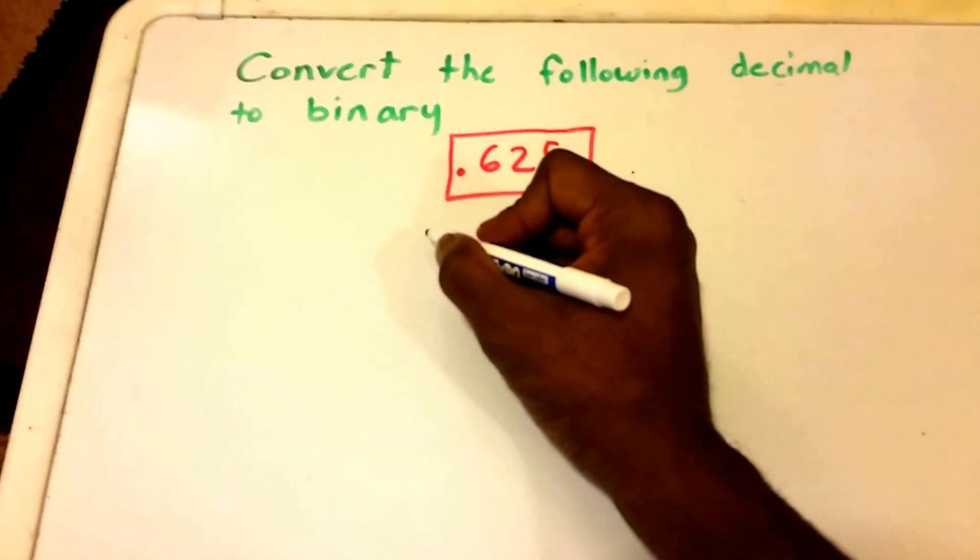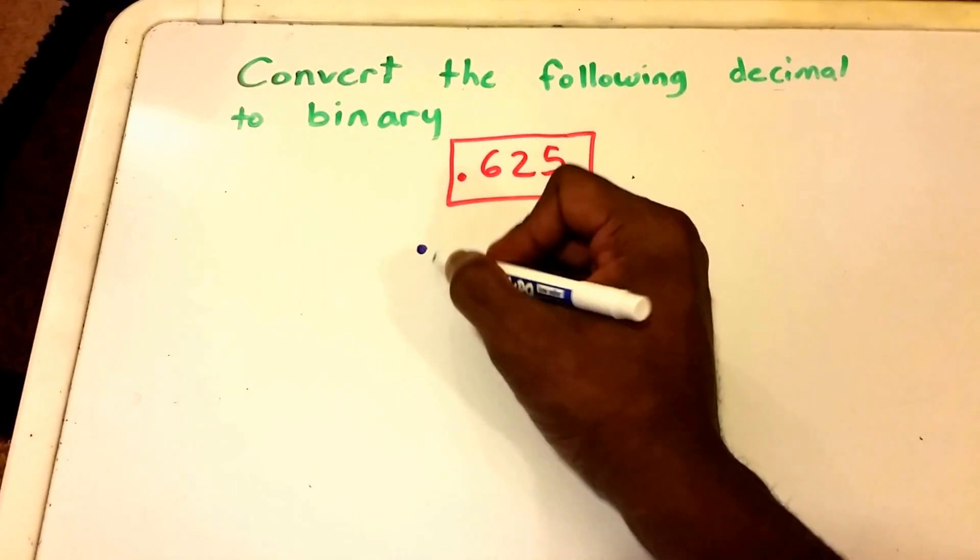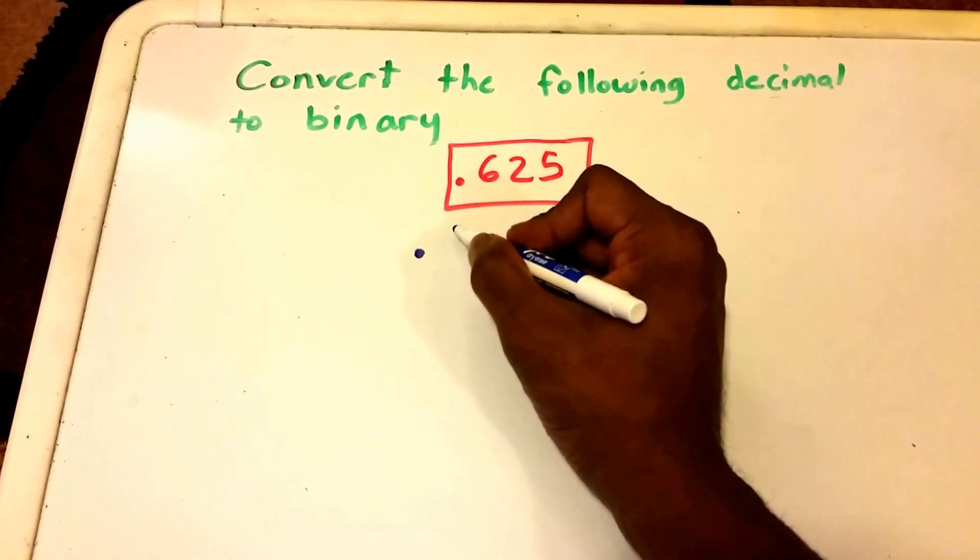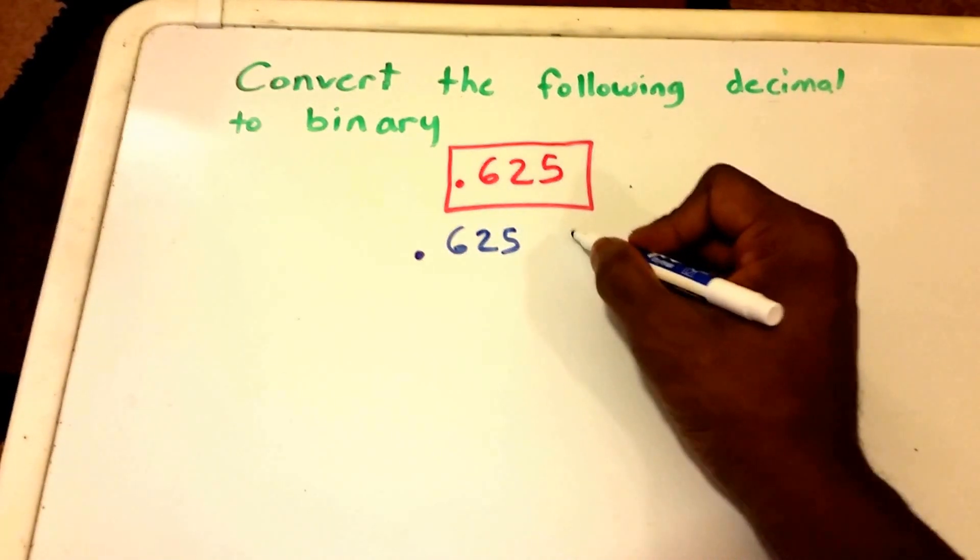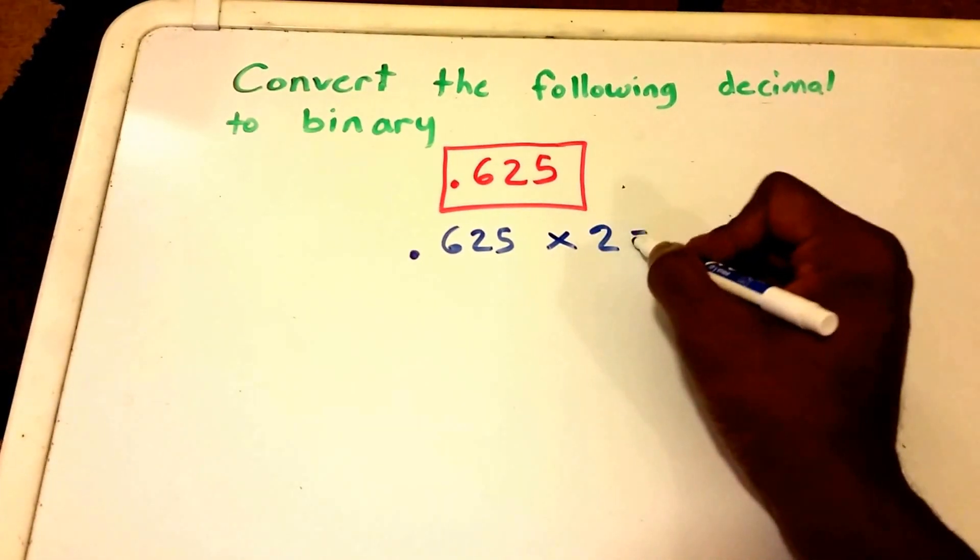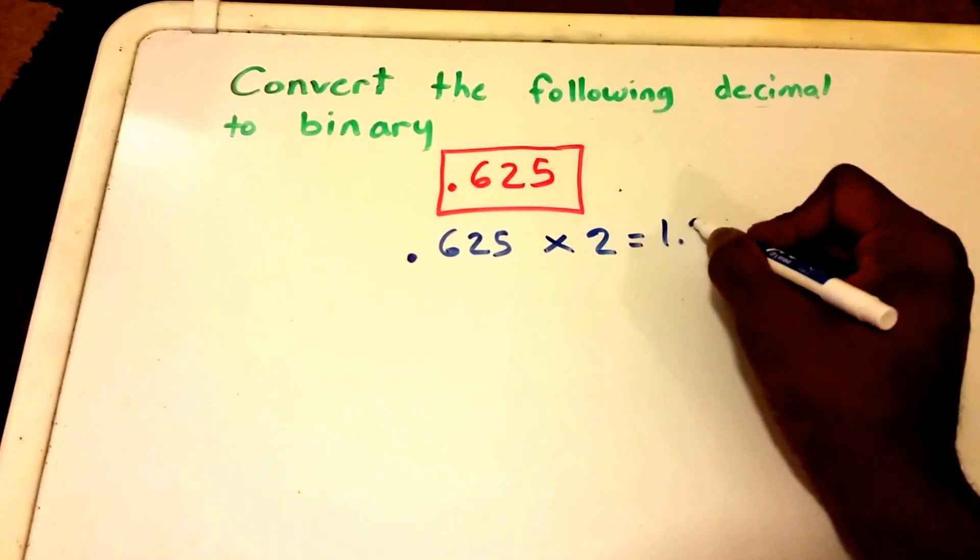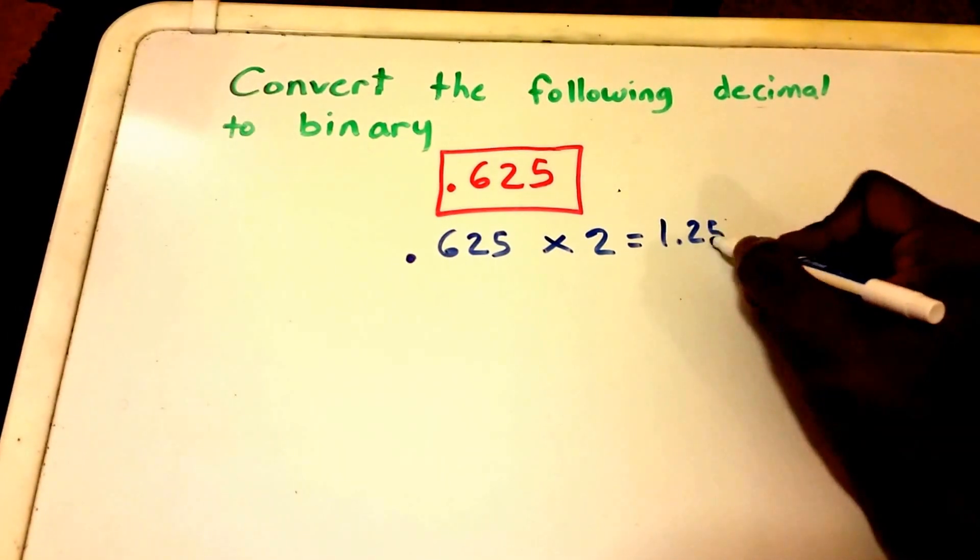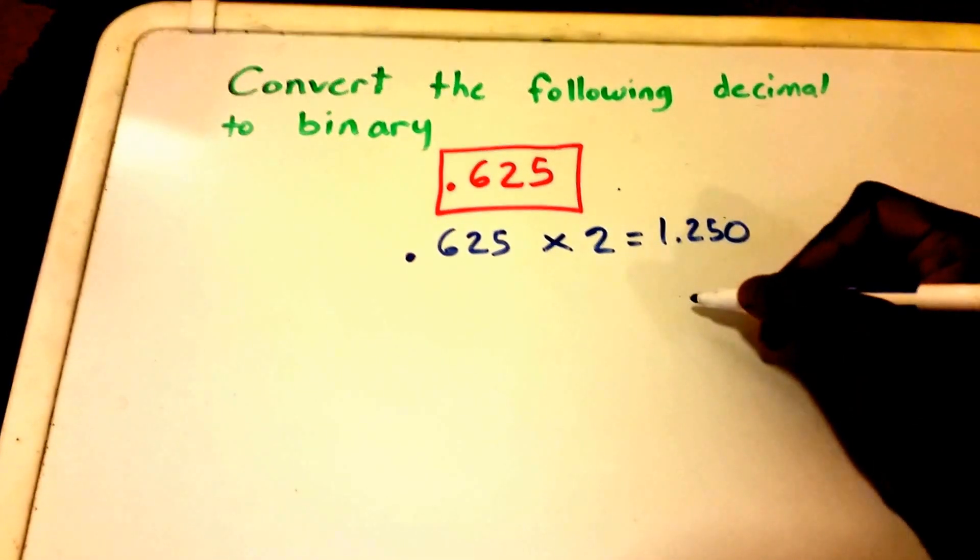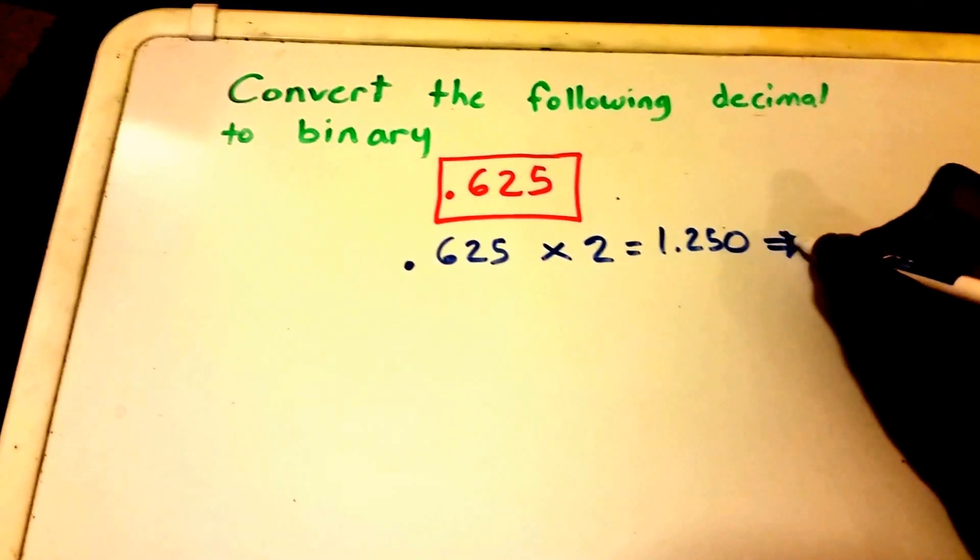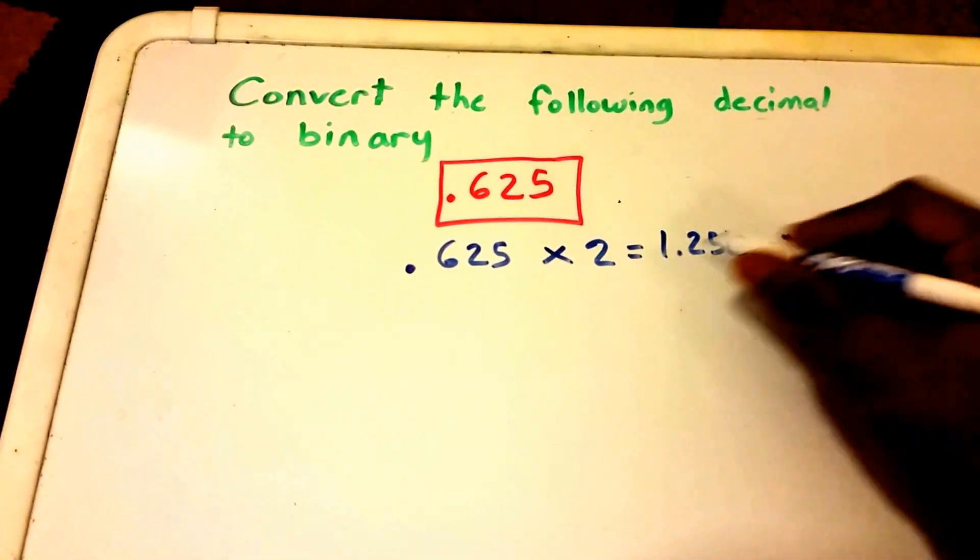So let's first rewrite our binary, I'm sorry, let's rewrite our number which is 0.625 and we're going to multiply that by two to get 1.250 and then we take the whole number and that's going to become our first binary digit which is 1.